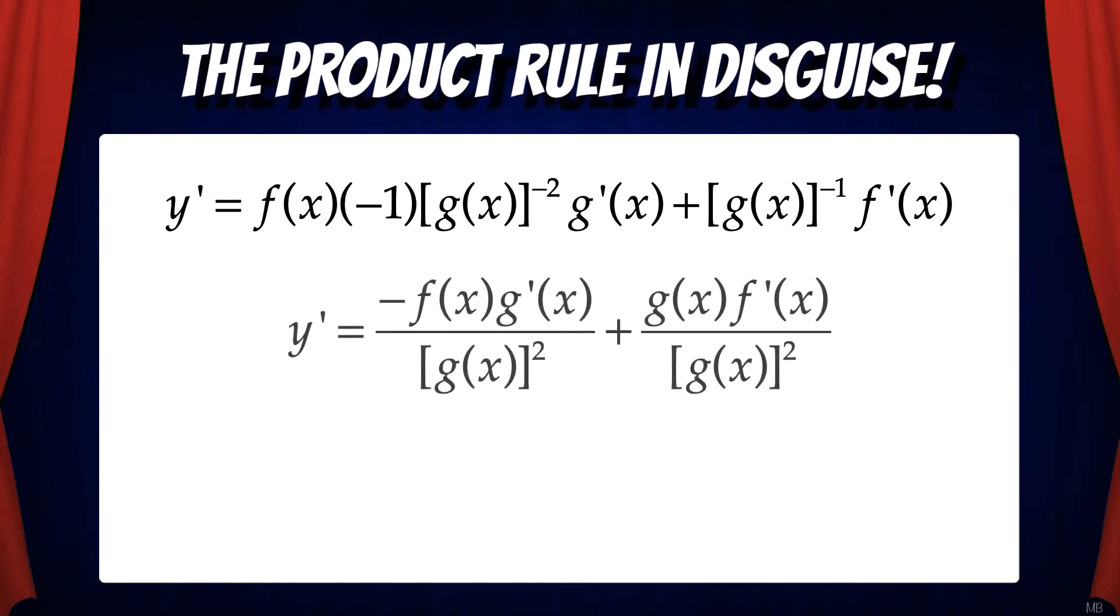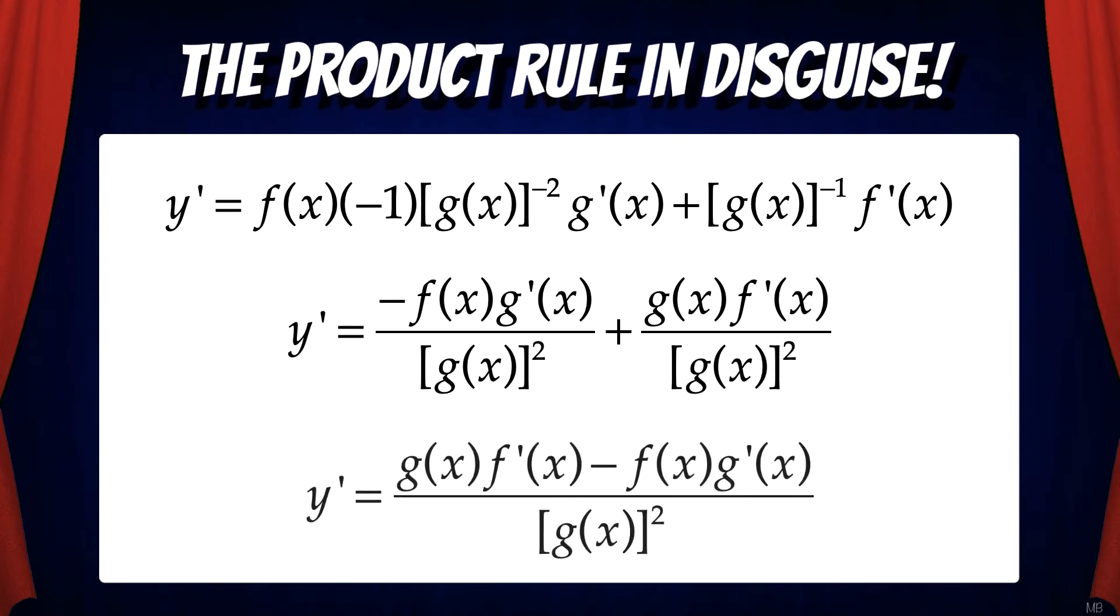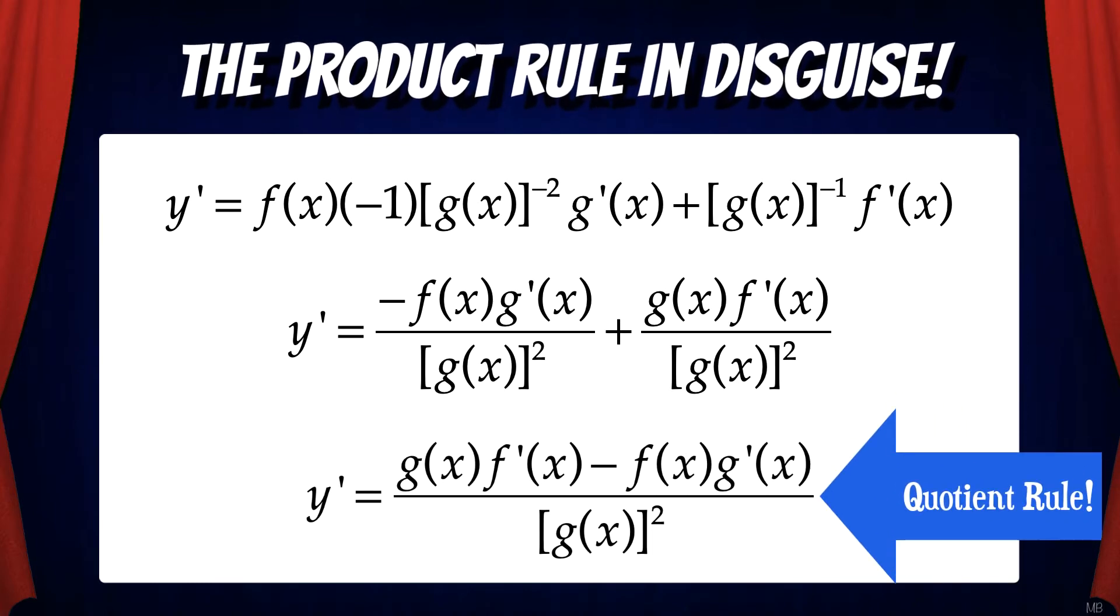Now we have common denominators so we can combine the terms. If we rearrange, we're going to get g f' minus f g' all over g squared. And that's the quotient rule.